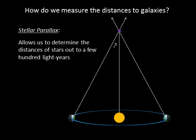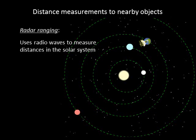We've already discussed using stellar parallax to measure distances to nearby stars. Measuring parallax requires the precise Sun-Earth distance, the astronomical unit. Astronomers measure the astronomical unit via radar ranging. In this method, radio waves are transmitted from the Earth and bounced off of Venus. The round-trip travel time allows us to calculate Venus' distance from Earth, and from that we can work out the length of an astronomical unit.